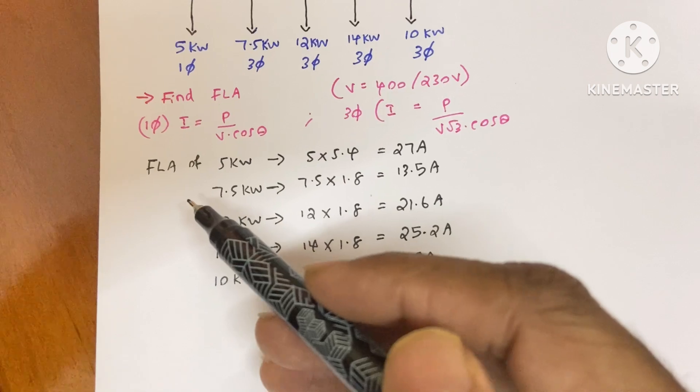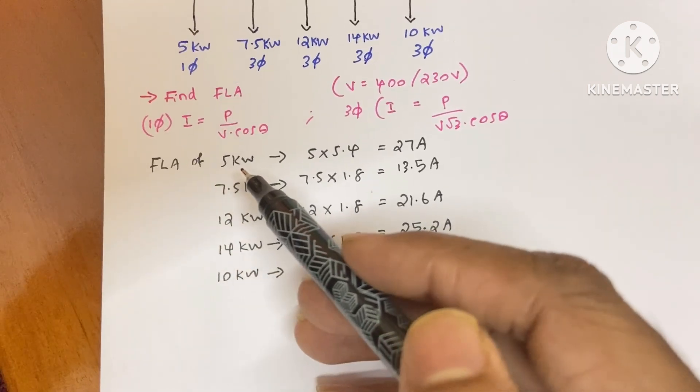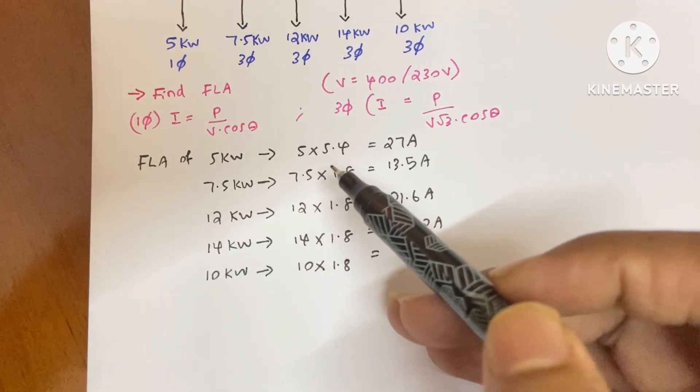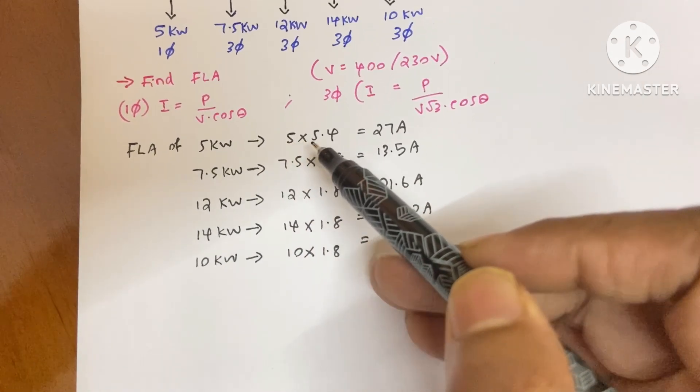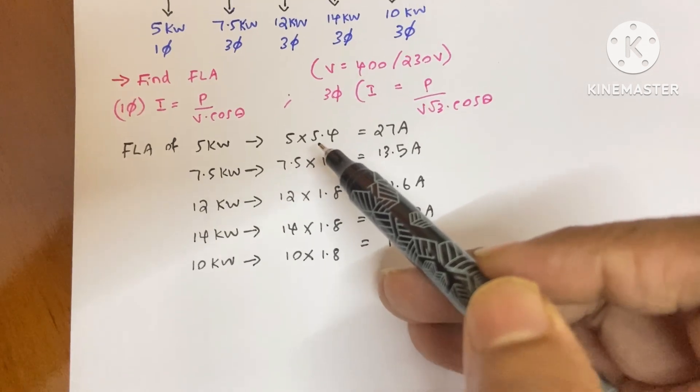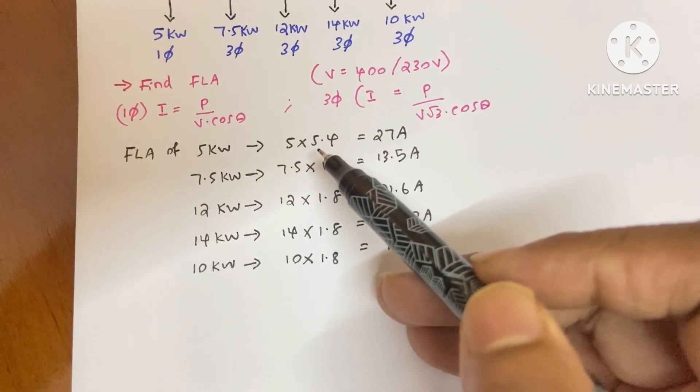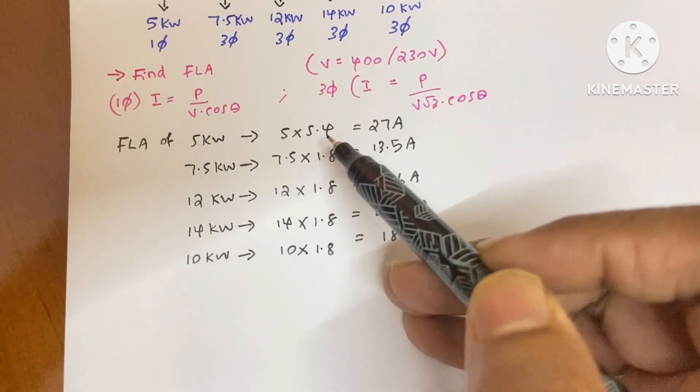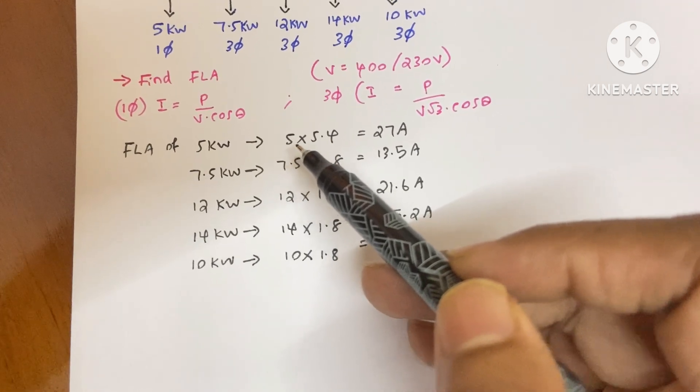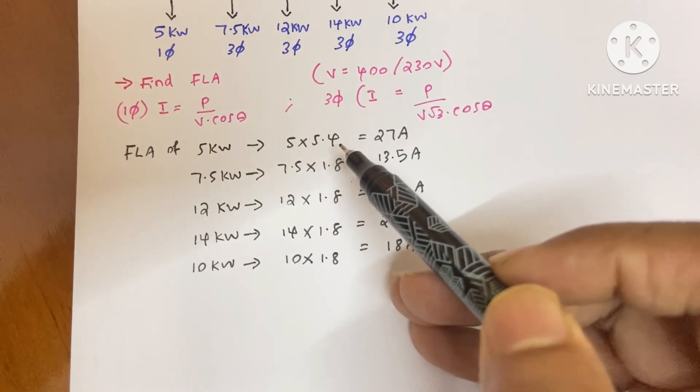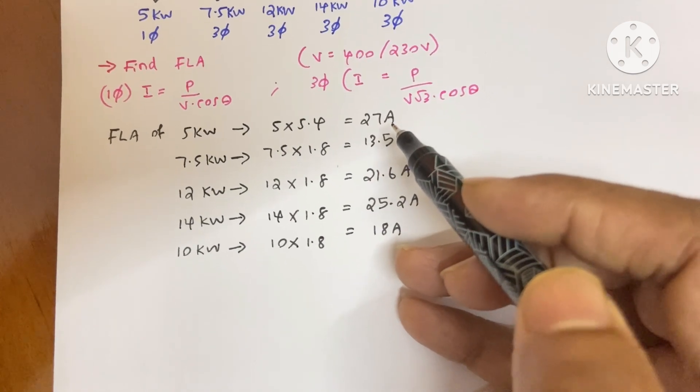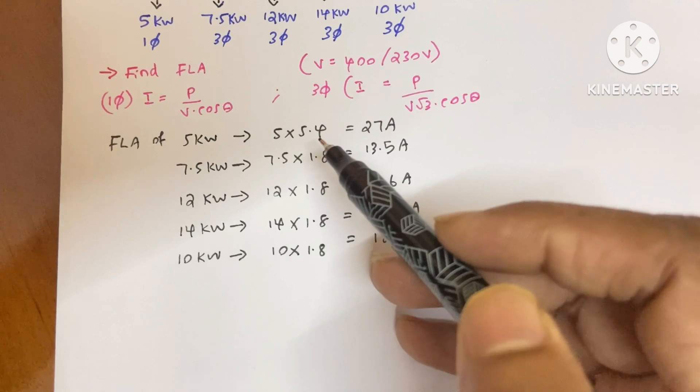Now we are going to find the full load ampere of the 5 kilowatt single phase motor. So here, 5 kilowatt into 5.4. We have a shortcut method here. If the motor is single phase, then we multiply the kilowatt with 5.4, then we will get 27 ampere. It is the full load ampere using this shortcut method.